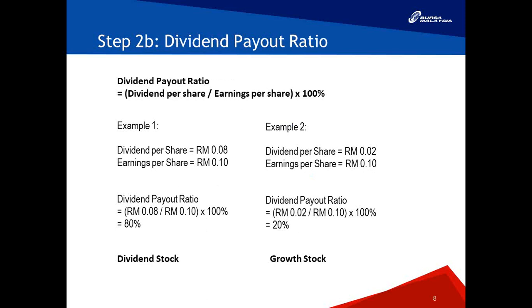The second formula is dividend payout ratio: dividend per share divided by earnings per share, multiplied by 100%. Example one: a stock pays RM0.08 per share and earns RM0.10 per share — dividend payout ratio is 80%. Example two: the same earnings of RM0.10 but only pays RM0.02 in dividends — dividend payout ratio is 20%. The stock in example one retains RM0.02 per share; the stock in example two retains RM0.08 per share, giving it more financial resources to invest for growth.